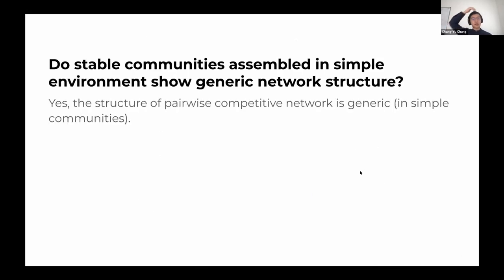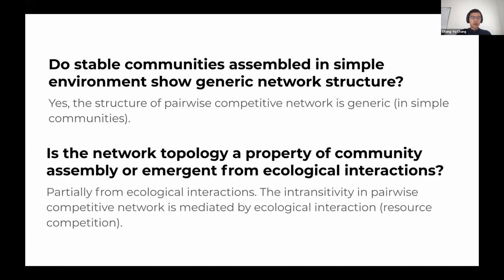In conclusion, stable communities assembled in simple environments do exhibit a generic network structure — the answer is yes — and the structure is characterized by transitive, hierarchical motifs rather than intransitive ones, at least in the simple communities we consider. In more complex communities with other ecological mechanisms, I would expect the structure to be less predictable. The topology is at least partly explained by ecological interactions: the lack of intransitivity we observe can be attributed to resource competition, which limits the occurrence of intransitive motifs already at the level of the species pool.